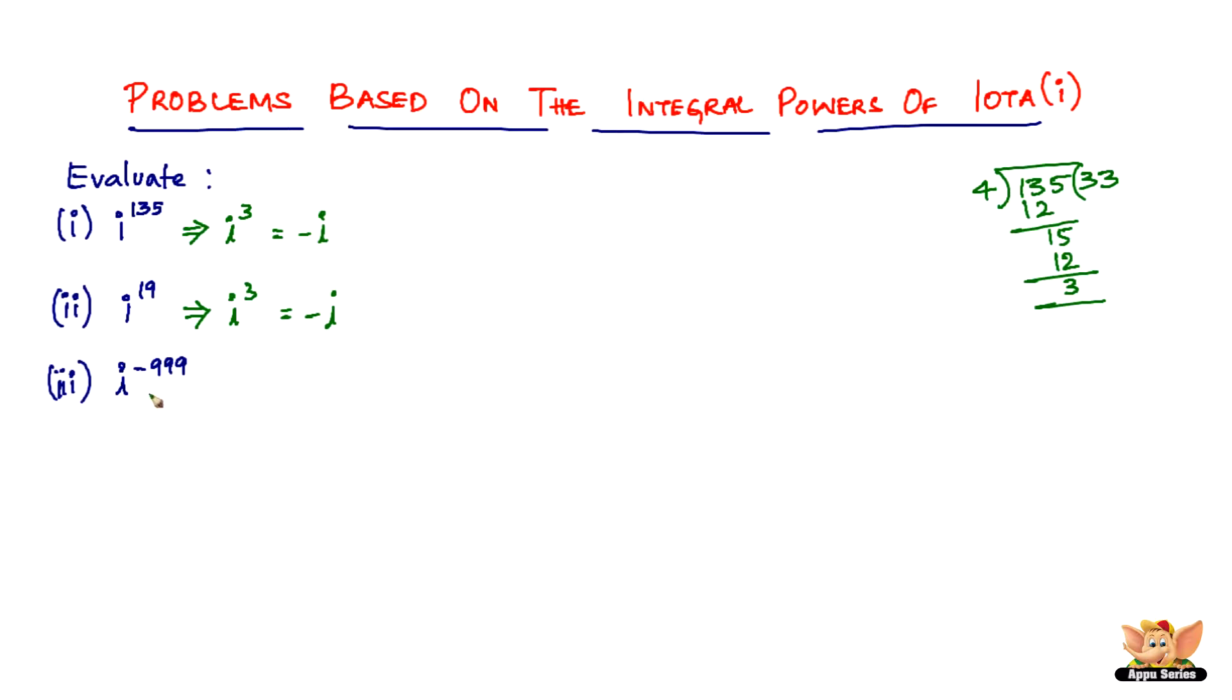We've got a problem here which has a negative exponent. That is nothing but it has to be written like this. Anything to the power of a negative exponent can be written as 1 divided by the same thing with a positive exponent. So i to the power negative 999 can be written as 1 divided by i to the power 999.